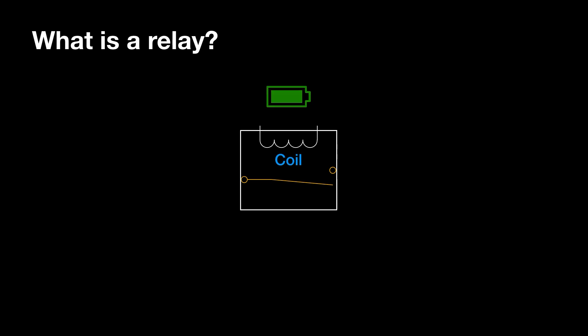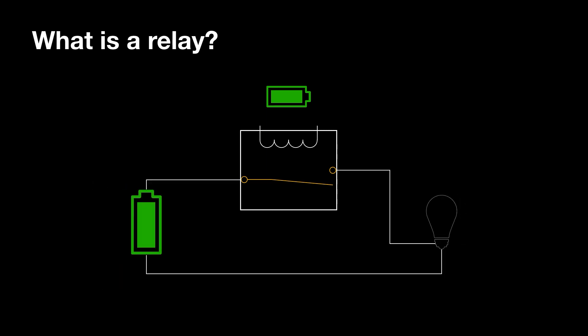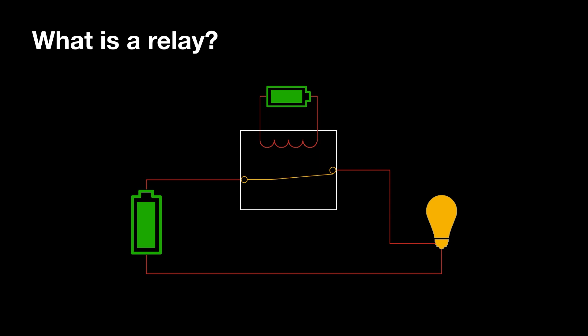To operate the coil, an external energy source is needed. In a non-latching relay, when the coil becomes energized, it becomes an electromagnet that attracts the armature. The armature moves to touch the contact, and when it becomes de-energized, the armature moves back to its original position. The primary use for relays is to use a small amount of power at the coil to then turn on a device that uses much more power, like a light bulb.